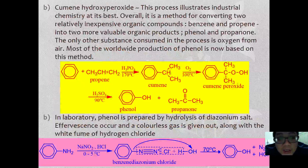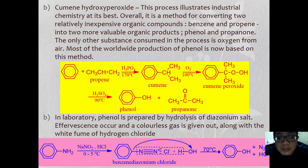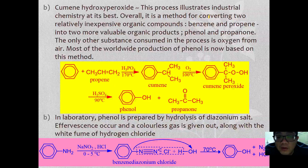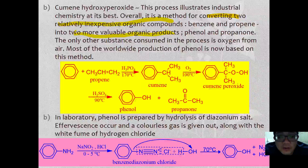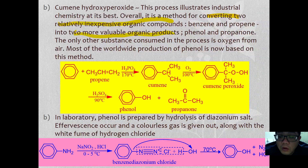The second, more preferable method uses cumene hydroperoxide, which illustrates the industrial process at its best. It is a method for converting two relatively inexpensive organic compounds into two more valuable organic products: phenol and acetone. The only other substance consumed in this process is oxygen, making it one of the most widely used methods to synthesize phenol.